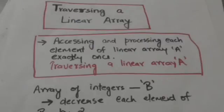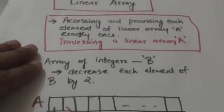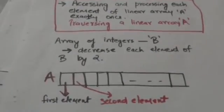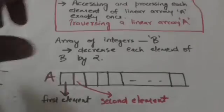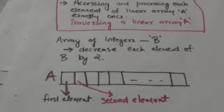Suppose we want to decrease each element of an array of integers B by 2. This can be accomplished by traversing.